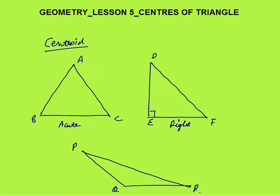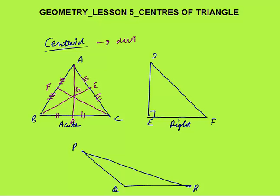Now let's discuss the centroid. The centroid is the point G where all three medians from vertices to opposite sides meet. Let the midpoints be D, E, and F. The centroid has a very important property: it divides each median in the ratio 2:1.